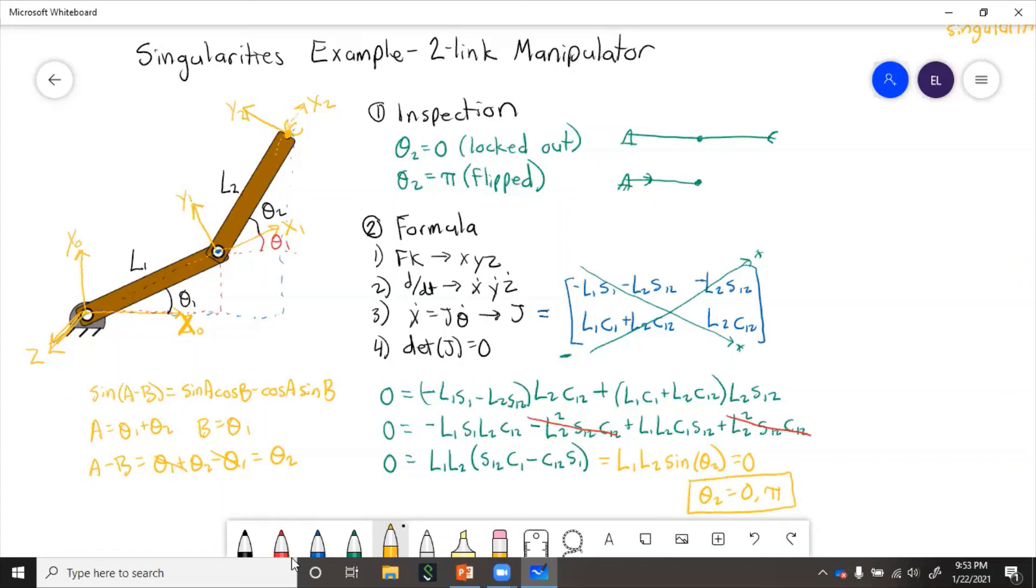So our original guess was correct. What we found by inspection. If theta two is locked out or it's completely flipped, then the robot loses a degree of freedom. And it basically becomes like a one link robot.